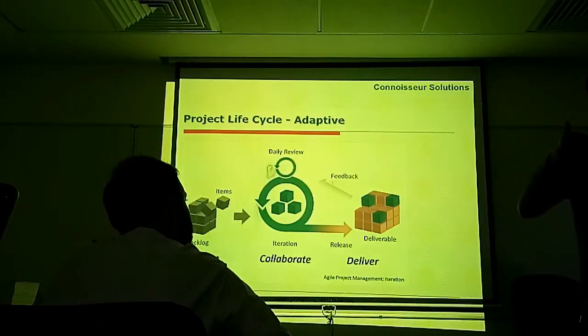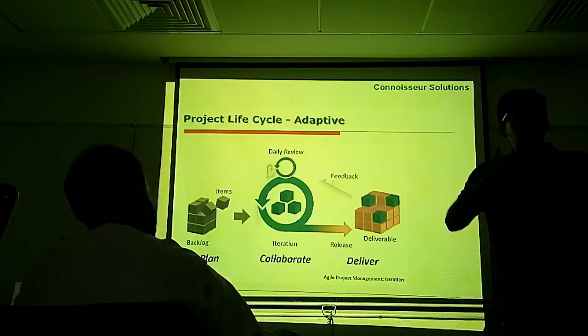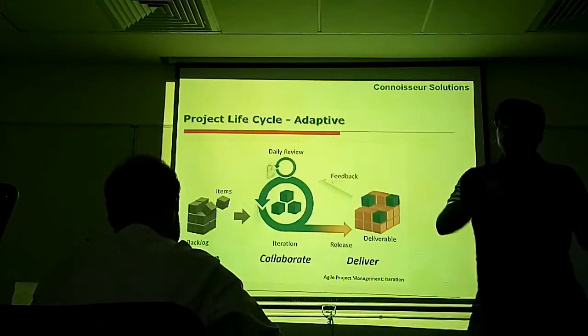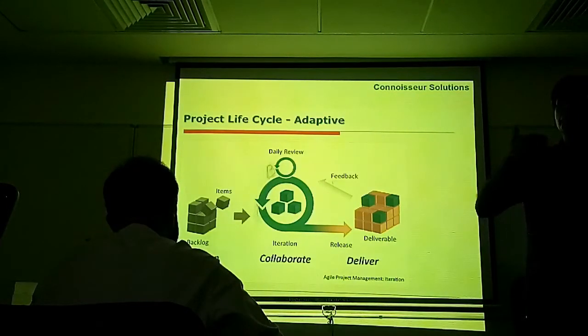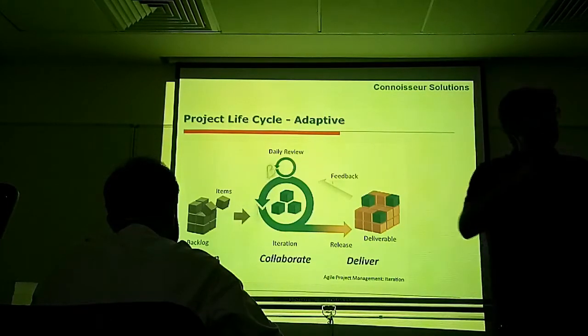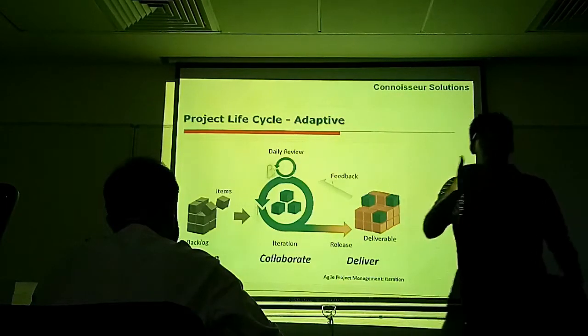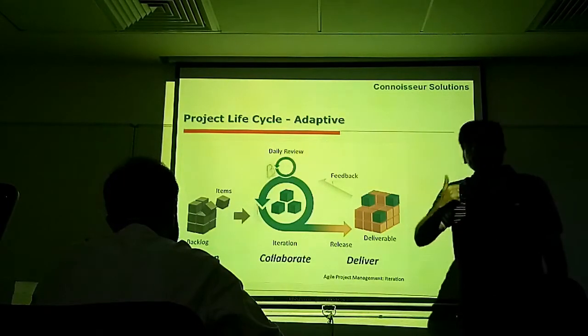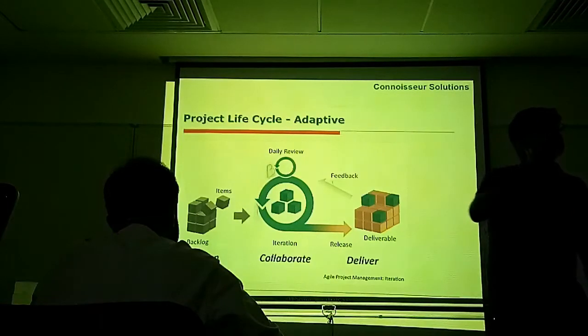Now, what you do in adaptive is you decompose the phases further into short, short iterations. And each iteration can vary from 2 to 4 weeks. Phases are further divided into small iterations of 2 to 4 weeks. And each iteration is called as sprint.